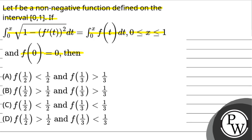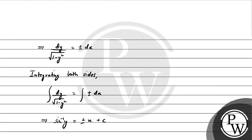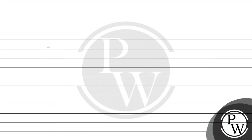अब question में दिया गया था f(0) = 0, तो हम लोग यहाँ पर x = 0 put करेंगे। y भी 0 ही मिल रहा है। So sin⁻¹(0) = ±(0) + c, तो यहाँ से हमें c की value भी 0 मिल जाएगी।